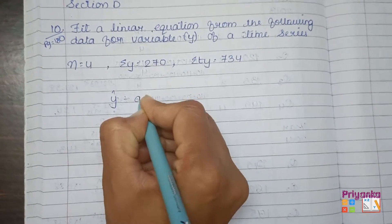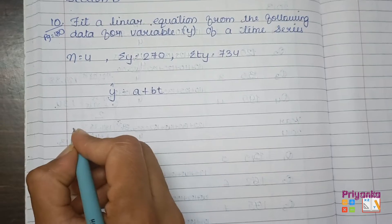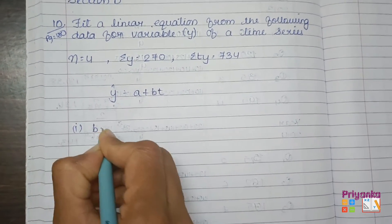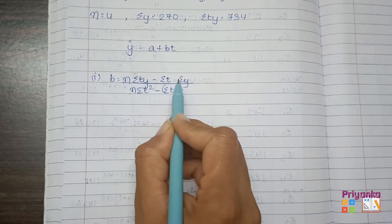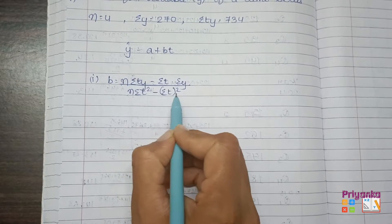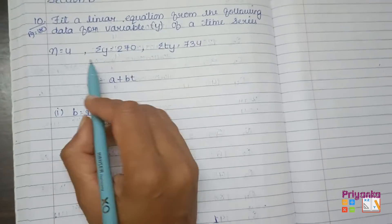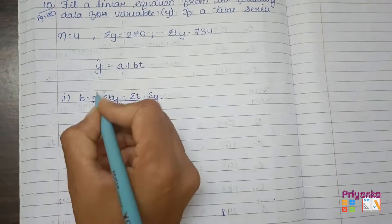First check the formula for the linear equation. Here the formula is y cap equals a plus b t. Now for this first step we'll find out b. The formula for b is n sigma ty minus sigma t into sigma y divided by n sigma t square minus sigma t whole square.